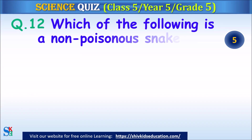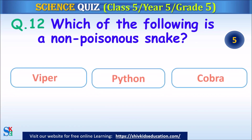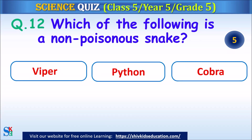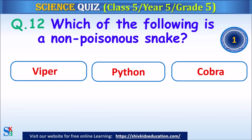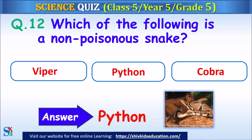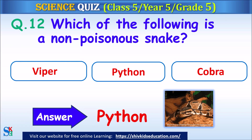Question 12: Which of the following is a non-poisonous snake? Viper, python or cobra? The answer is python.